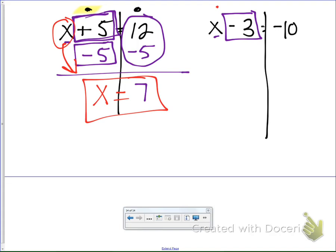Again, I'm looking for the opposite of that. So the opposite of negative 3 is going to be positive 3. And if I did it to my left side, I have to do it to my right side. So now I'm looking at negative 10 plus 3, or a positive 3.